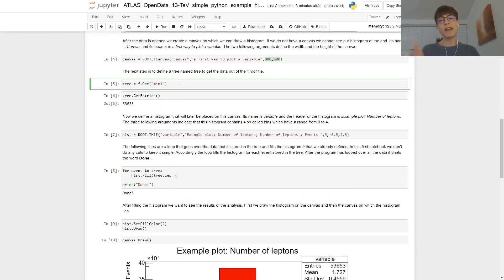To access the data inside the ROOT file, remember that we need to first have a tree. So we declare a variable, we call it tree, and then inside the file, we get the tree called mini. Now to see how many entries we have in that tree, we just go tree.GetEntries, and it outputs the amount of entries. In this case, we have 53,653 different values.